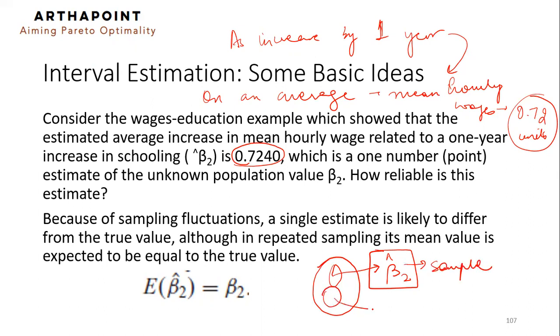What if I would have picked up another sample and calculated beta 2 hat? I would have got a value which would have been something different from 0.7240. This implies that because the sample fluctuates, because of fluctuations, this would not be a very right estimate to begin with. Sometimes you might get that the increase will be by 0.72 units. Sometimes you might get that the increase will be by 0.69 units. Sometimes you may get that the increase will be by 0.79 units. And sometimes you may get that the increase will be by 0.64 units.